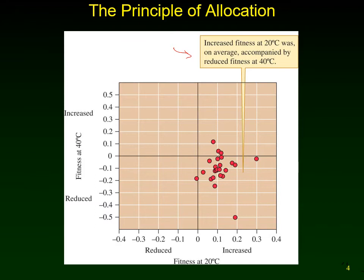The original question was: will adaptation to a low temperature of 20 degrees be accompanied by a loss of fitness at 40 degrees? Can you only be good at 20 degrees? Can you not be good at both 20 and 40, even if some populations had previously been grown at higher temperatures? They compared fitness by measuring how quickly the population size doubled — comparing the low-temperature-selected lines with the ancestral lines at both 20 and 40 degrees Celsius.